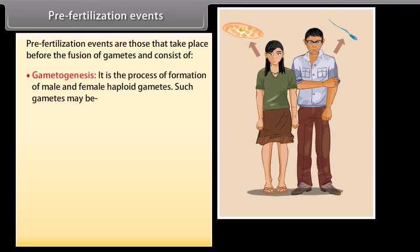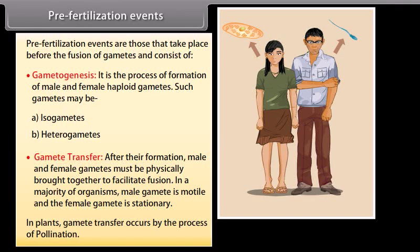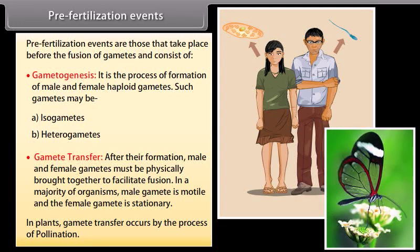Pre-fertilization events are those that take place before the fusion of gametes and consist of gametogenesis, which is the process of formation of male and female haploid gametes. Such gametes may be isogametes or heterogametes. After their formation, male and female gametes must be physically brought together to facilitate fusion. In plants, gamete transfer occurs by the process of pollination.